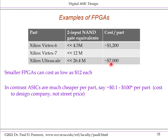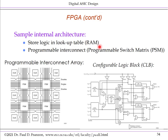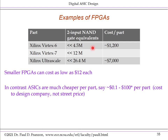Examples of FPGAs include the Intel/Xilinx Virtex 6, which can theoretically implement up to 4.5 million gates — though in practice perhaps 1 million-plus gates — at $1,200 per part. A high-end example is the Xilinx Ultrascale, theoretically up to about 26 million gates, practically around 10 million gates, at about $7,000 per part. Smaller FPGAs implementing tens of thousands of gates can be as low as $12 each.